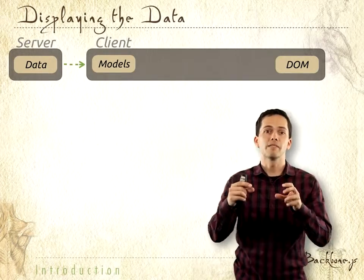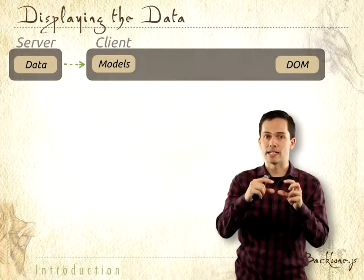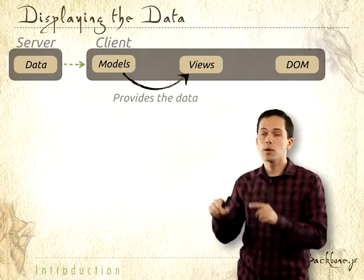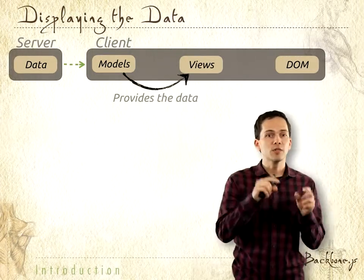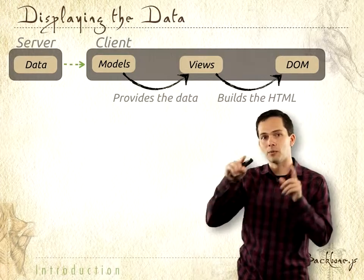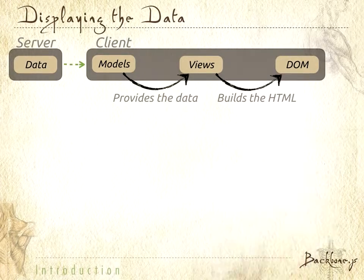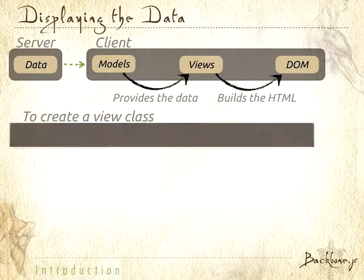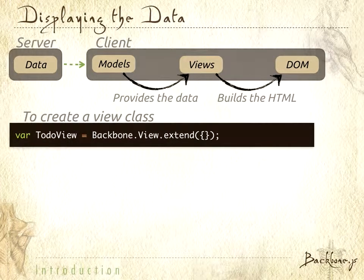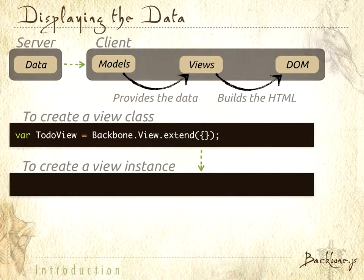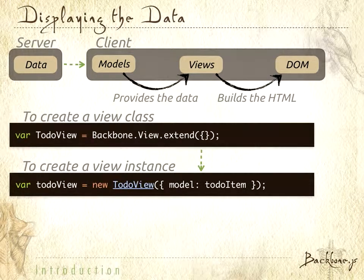On the client side, we have models which encapsulate our data. Those models provide the data for the views, and it's the view's responsibility to build the HTML, which we then put back into the DOM. To create a view class, we're going to create a TodoView — notice again the capitalization — and that is going to extend from the Backbone View base class. To create a view instance, just like we created a model instance, we instantiate a new TodoView and send in the model we created previously.